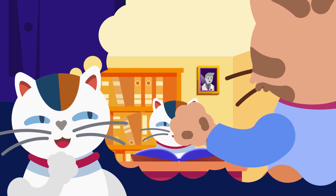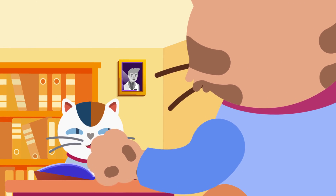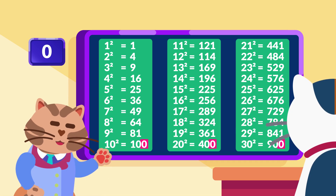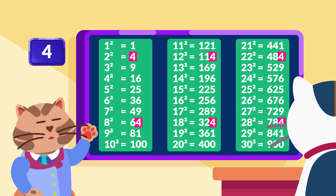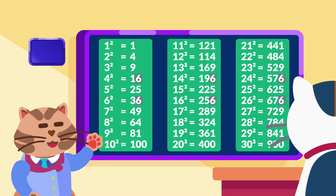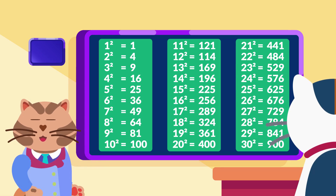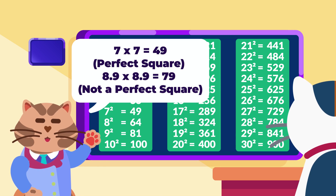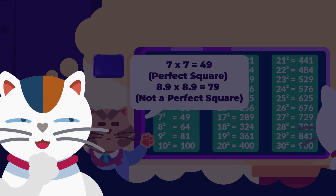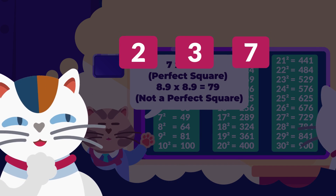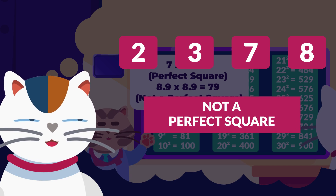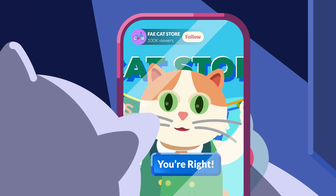Remember, in the world of perfect squares, the unit digits — or the last digit — follow specific patterns: 0, 1, 4, 5, 6, or 9. However, it doesn't work in the opposite way, as seen with 79, which isn't a perfect square despite ending in 9. So always keep in mind that if the unit digit is 2, 3, 7, or 8, the number is definitely not a perfect square. This rule applies even to larger numbers.